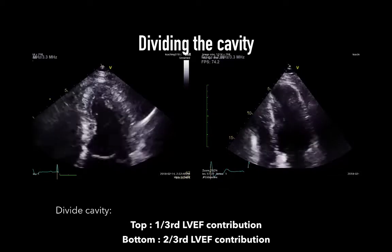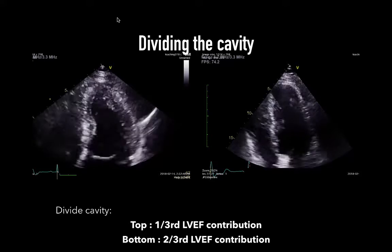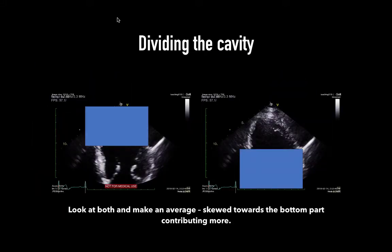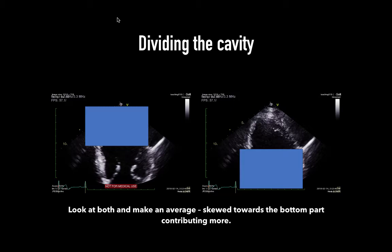In some instances, LV dysfunction might be present in a new form but not always, as shown in the right-sided clip. A quick way to account for this is to divide the cavity into two halves and estimate LVEF separately. The top half contributes roughly one-third of the volume, while the bottom contributes two-thirds. For example, if the apex has an EF of 30% and the base has an EF of 60%, the average would be around 45%, but since the base contributes more, the EF can be edged closer to 50–55%.